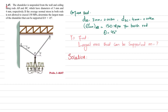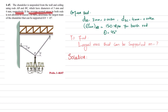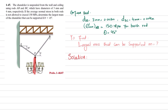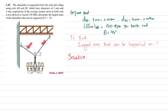Welcome back. Problem 1-47: a chandelier is suspended from the wall and ceiling using rods AB and BC, which have diameters of 3 millimeters and 4 millimeters respectively. The diameter of AB is 0.003 m and BC is 0.004 m. The allowable average normal stress in both rods is 150 MPa and theta is given as 45 degrees.